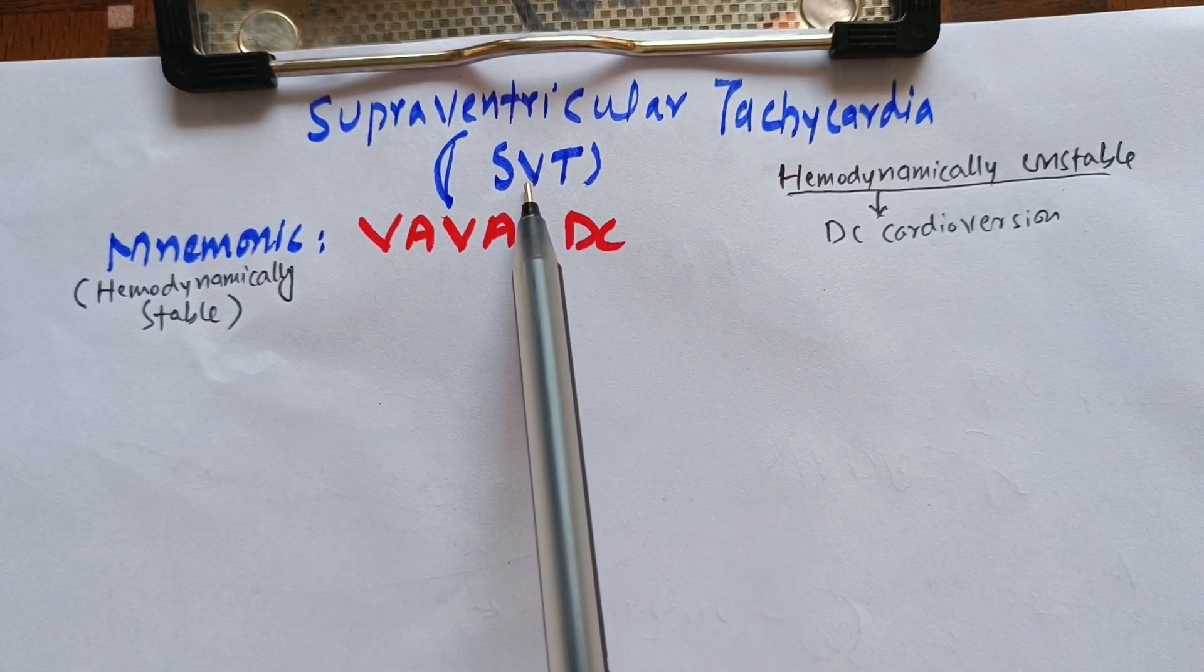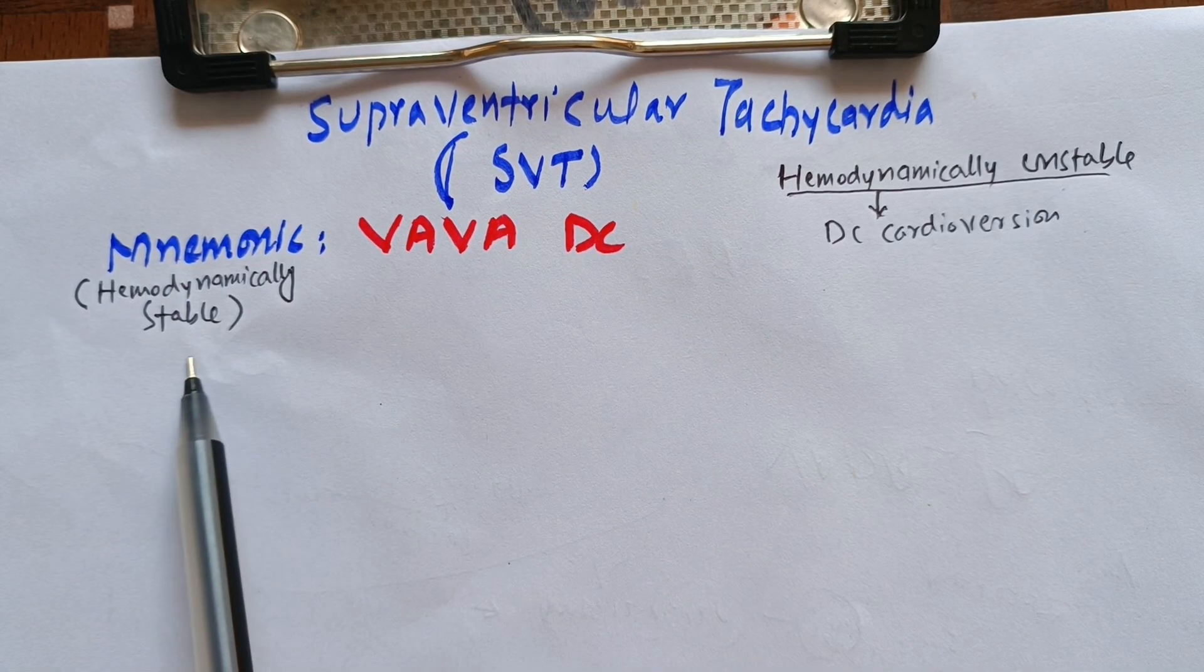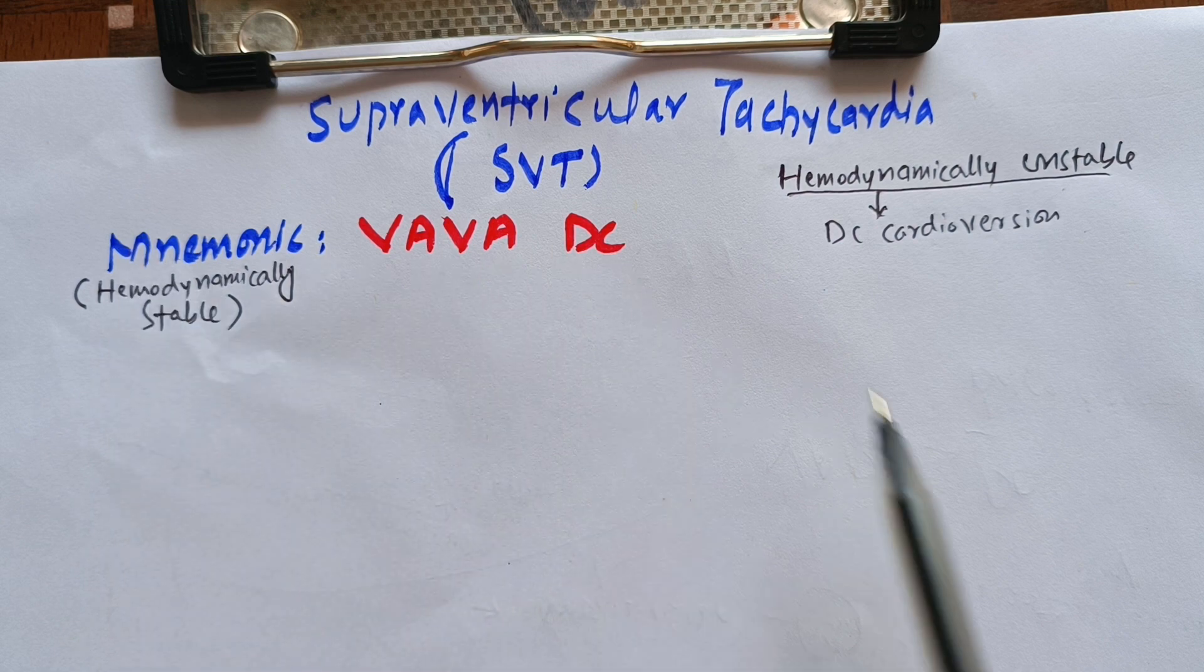Today we will be talking about supraventricular tachycardia SVT. The mnemonic for hemodynamically stable patients is VAVA DC.